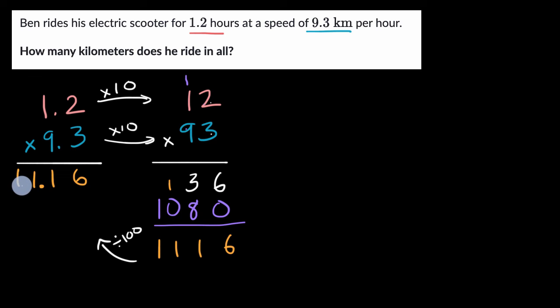If we put the decimal here, it'd be only 1. If we put the decimal here, it would be 111. If we put the decimal there, it'd be 1,116. And that also makes sense. We just said we're multiplying by 10 twice and then multiplying those together, so this is 100 times bigger than whatever this should be.